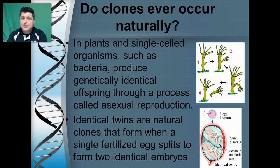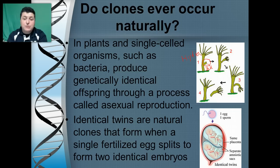Now cloning is actually a natural process. Some plants and single-celled organisms that reproduce asexually will produce genetically identical offspring — essentially creating their own clones. For example, here we have an organism called a Hydra. They're related to jellyfish. On one side it's producing what's called a bud, and that bud is going to grow and divide using mitosis, and eventually it's going to pop off and be genetically identical to its parent — basically its own clone.